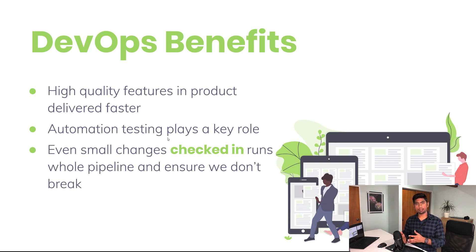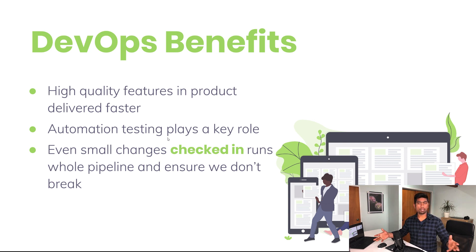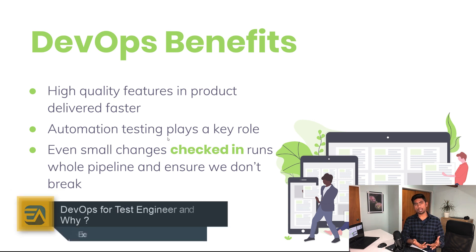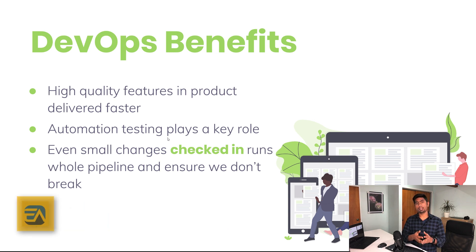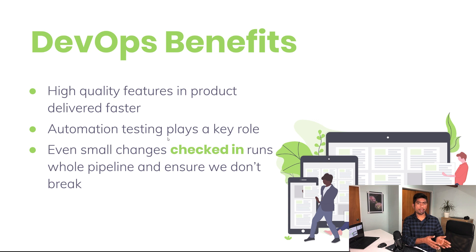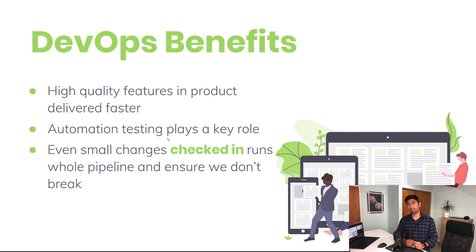Even small changes checked in run the whole pipeline and ensure we don't break anything. This is very important because developers are working from different parts of the world — especially in this pandemic situation where developers are working from home. They check in code, run the pipelines, and we ensure that the pipeline is running fine and the check-in hasn't broken anything. These are some of the super cool benefits of DevOps.